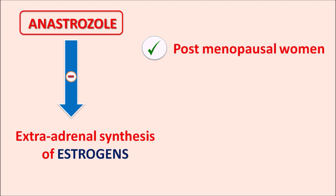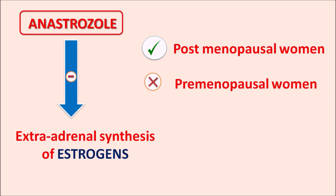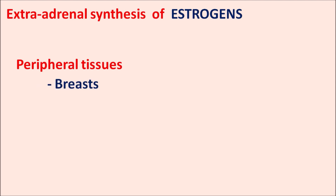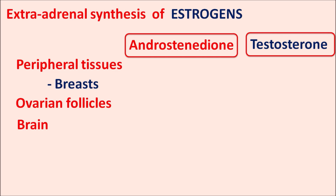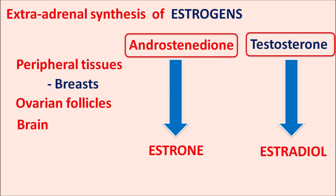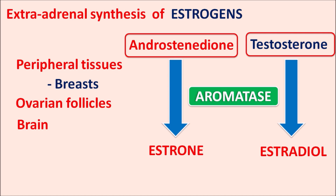That is why this drug is useful in postmenopausal women, where the extra-adrenal synthesis of estrogens is more pronounced, but this drug is ineffective in premenopausal women, in whom blocking this pathway leads to no significant reduction in estrogen levels. Extra-adrenal synthesis of estrogens can be observed in peripheral tissues like breast tissue, ovarian follicles, and the brain. Two important adrenal hormones involved are androstenedione and testosterone. Androstenedione is converted into estrone, whereas testosterone is converted into estradiol — both reactions mediated by the aromatase enzyme.